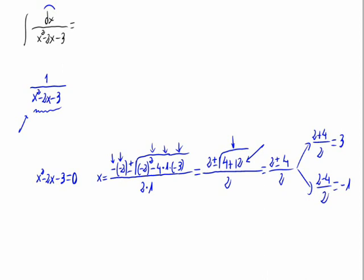But in our case, we have a pair of real roots. When we have real roots, we need to factorize the fraction of the integral — we have to decompose it into simple fractions. As the coefficient of x with the highest exponent is 1, we write two fractions.